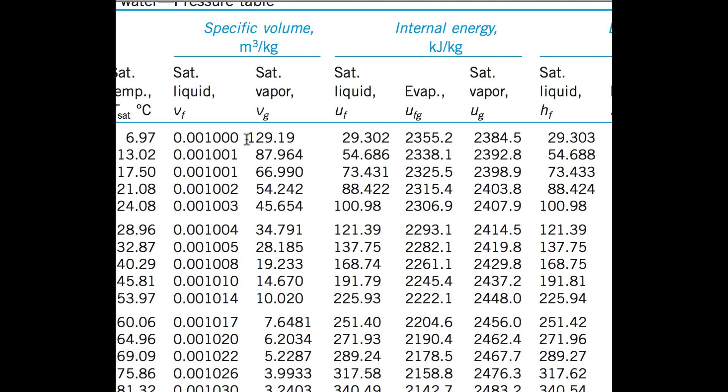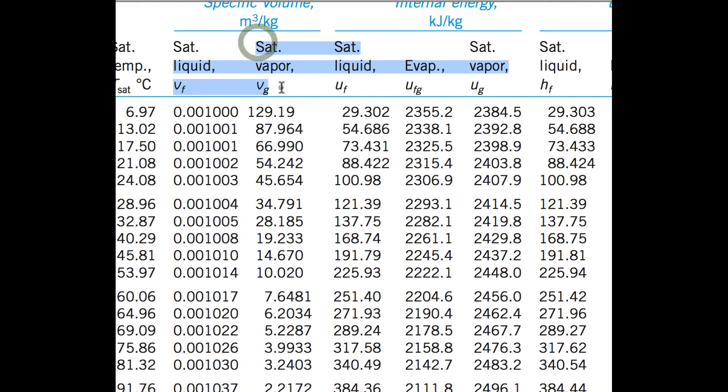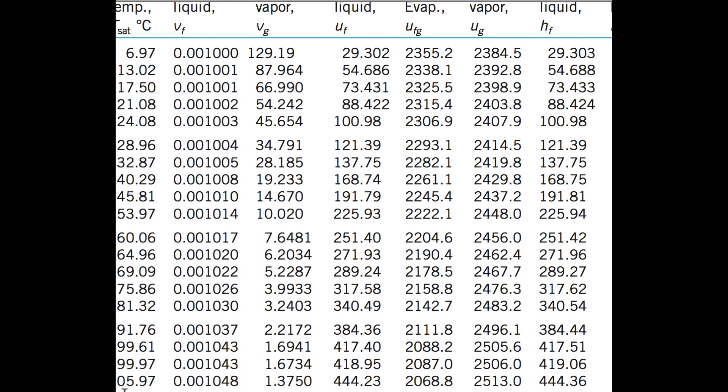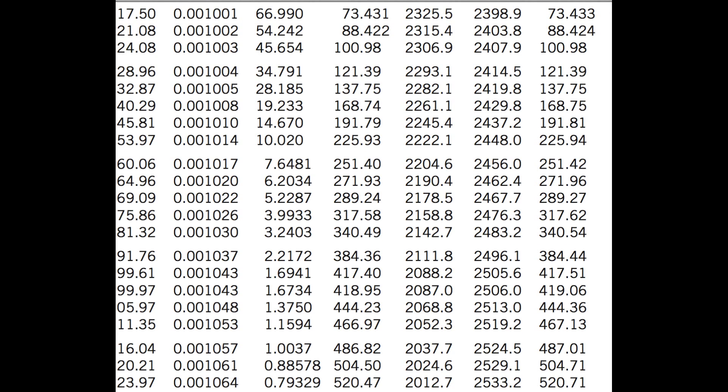So I'm on table A5, saturated water pressure table. We have a saturated vapor, so Vg, and at a pressure of 300 kilopascals, our saturated vapor specific volume is 0.60582. So it's this one right here. All right, so that was pretty easy. We know it's the saturated vapor.